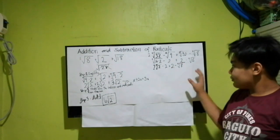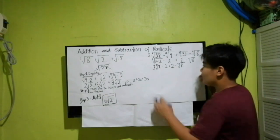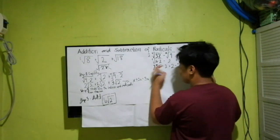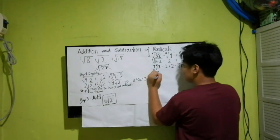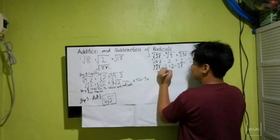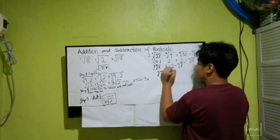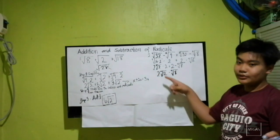Since there are two similar constant terms — negative 2 and plus 2 — those cancel out. The final answer is 2 fourth root of 2 minus fourth root of 8. The negative 2 and positive 2 cancel, which is why they disappear.